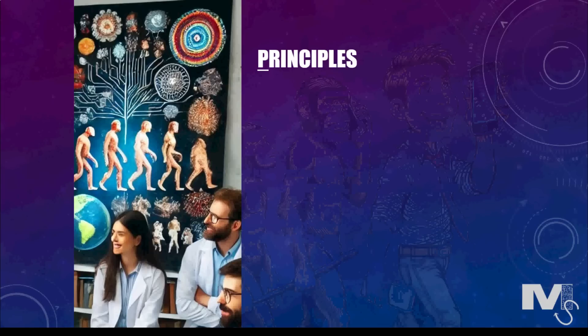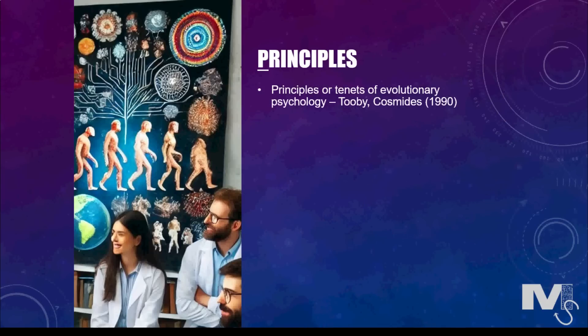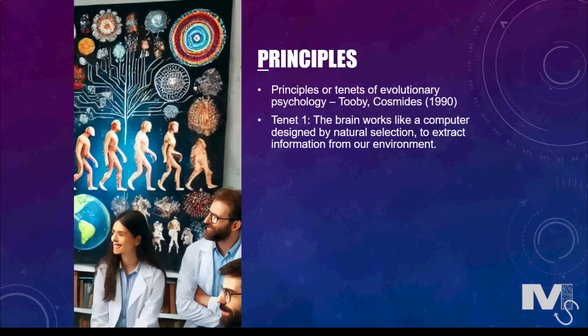American anthropologist John Tooby and his psychologist wife Lida Cosmides put forth some important principles or tenets of evolutionary psychology. Tenet 1 states that the brain works like a computer designed by natural selection to extract information from the environment. Connections between neurons are like pathways of information which ensure that new information from the environment is processed, and the way we behave to get good results in any situation is repeated if the situation arises again.